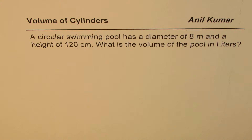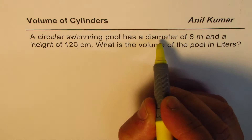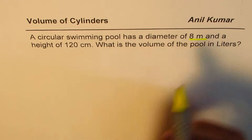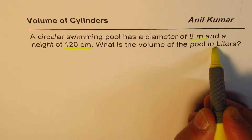I hope it will really help you to understand the connection between all three of them. The question is: a circular swimming pool has a diameter of 8 meters and a height of 120 centimeters. What is the volume of the pool in liters? So you can see in this particular question, we have three different units involved — diameter is given in meters, height in centimeters, and we want to find volume in liters.